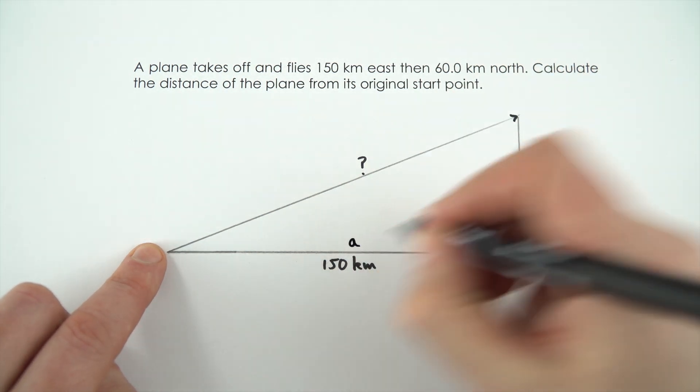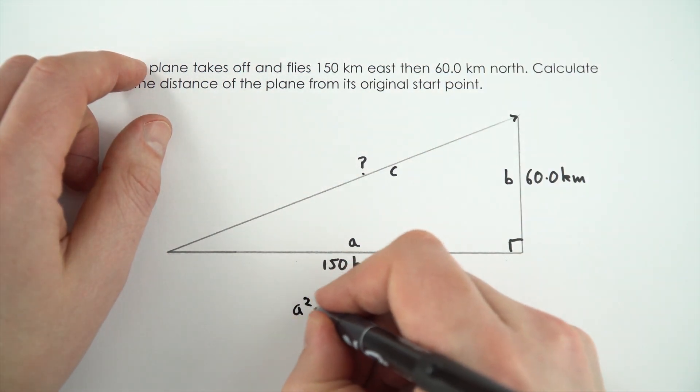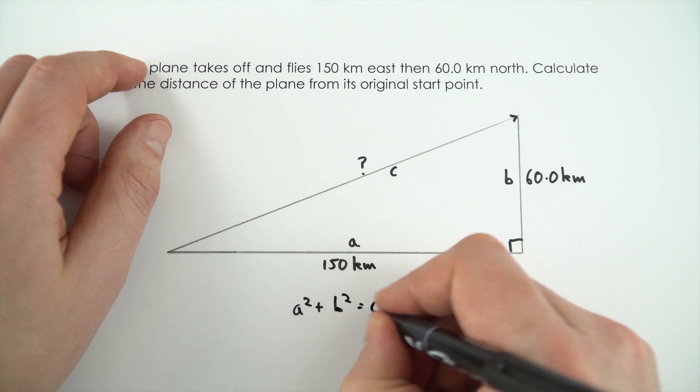So I'm just going to label that a, b and c. Now we're going to be using Pythagoras for this where a squared plus b squared is equal to c squared.